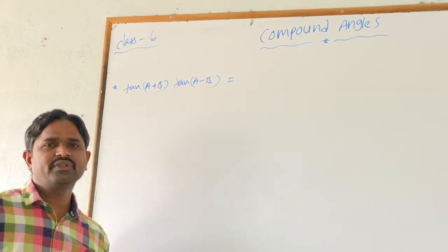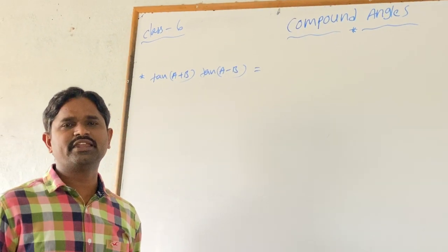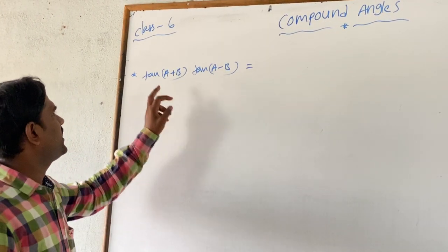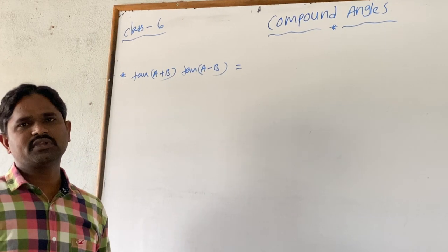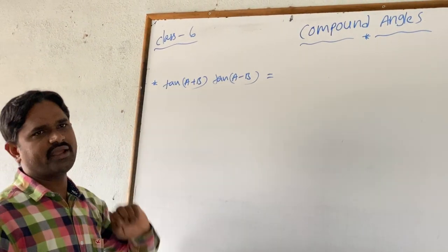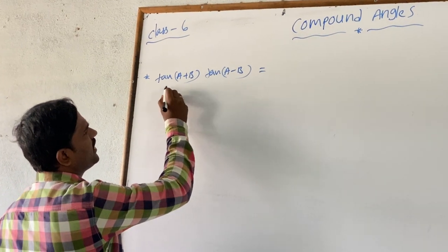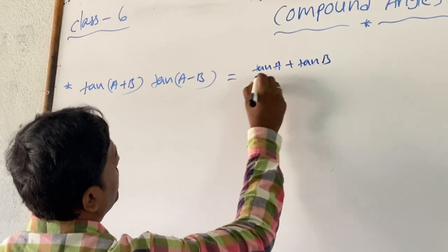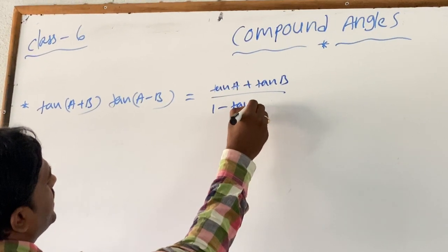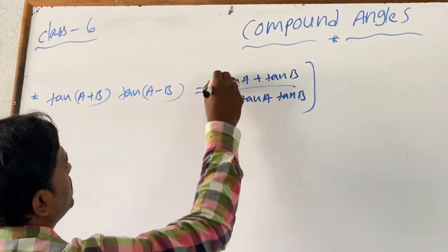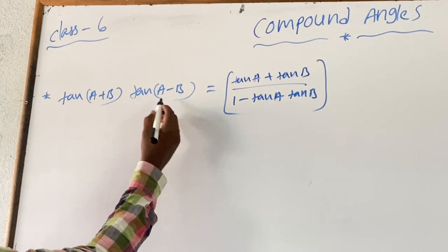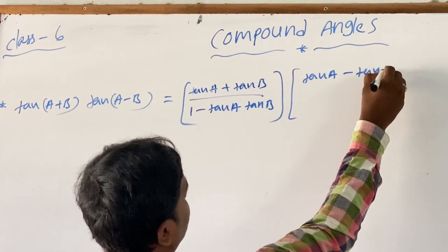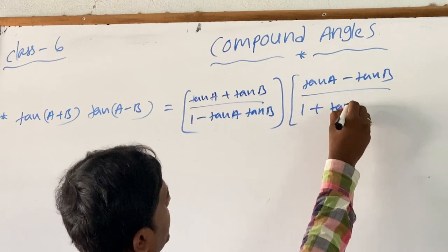Sixth class. In the previous class, we discussed about sin(A+B)·sin(A-B) and cos(A+B)·cos(A-B). The next one is tan(A+B)·tan(A-B). We already know the formula: tan(A+B) = tan A + tan B divided by 1 minus tan A·tan B, and tan(A-B) = tan A minus tan B divided by 1 plus tan A·tan B.